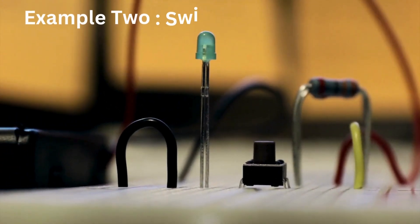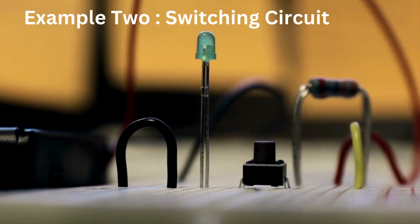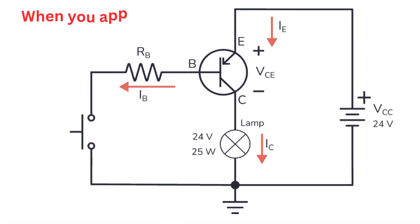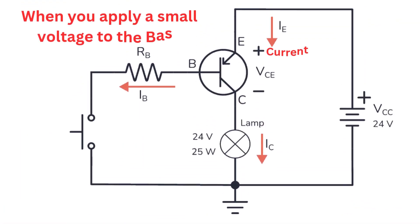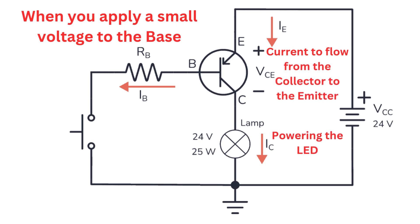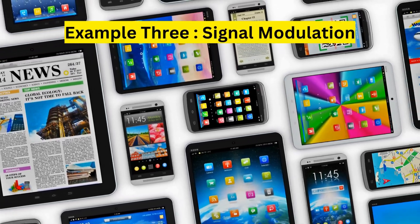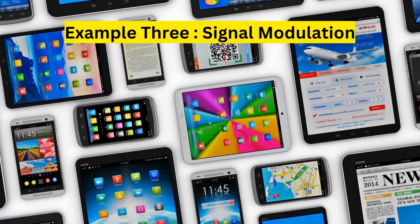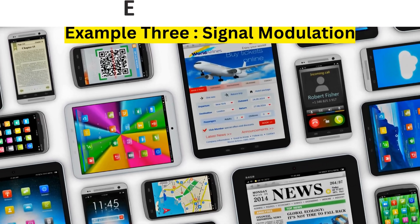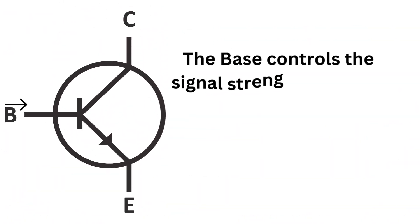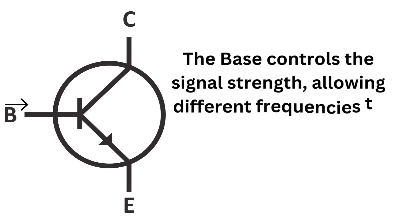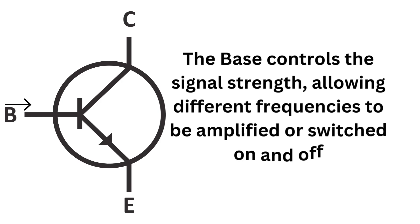In a switching application like turning on an LED, when you apply a small voltage to the base, it allows current to flow from the collector to the emitter, powering the LED. Remove the base voltage, and the LED turns off. In communication devices, transistors also modulate signals — the base controls the signal strength, allowing different frequencies to be amplified or switched on and off, enabling effective communication.